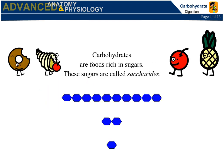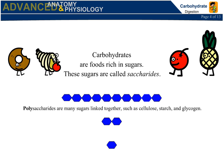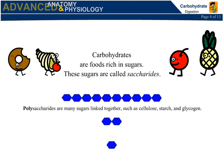Carbohydrates are foods rich in sugars. These sugars are called saccharides. Polysaccharides are many sugars linked together, such as cellulose, starch, and glycogen.